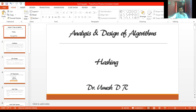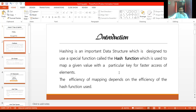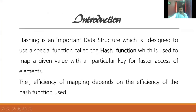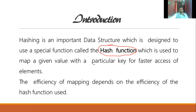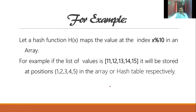To achieve that, we use a concept called hashing. Hashing is used to map a given value with a particular key for faster access of elements. A particular value will be mapped with a key value, and this mapping is done with the support of a hash function. The efficiency of this mapping always depends on the hashing function that we use.